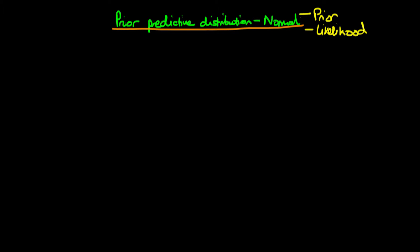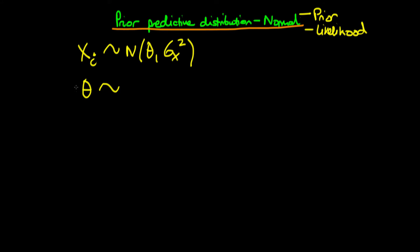The idea here is that we assume that an individual's test score, x_i, is given by a likelihood function which is normally distributed with a mean of theta and with a variance which I'm going to call sigma_x squared. We've also assumed a normal prior, so we're assuming that the parameter theta is itself normally distributed with some prior mean theta_zero and some variance which I'm going to call sigma squared theta.